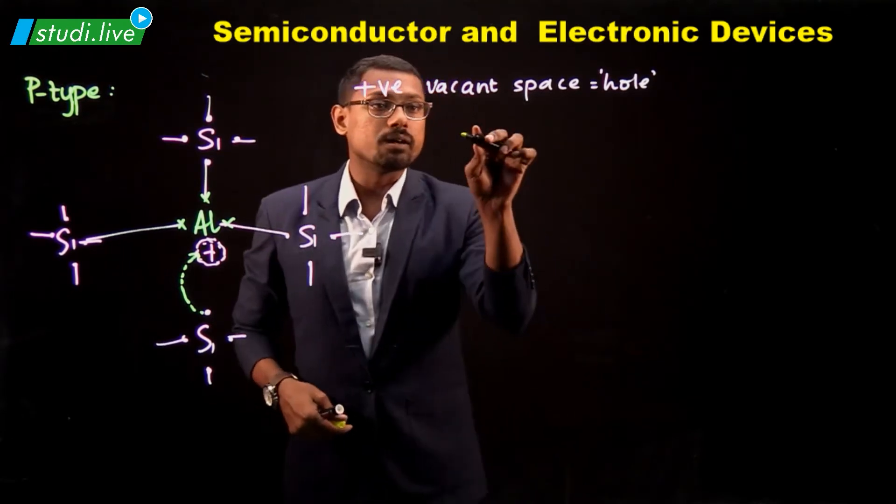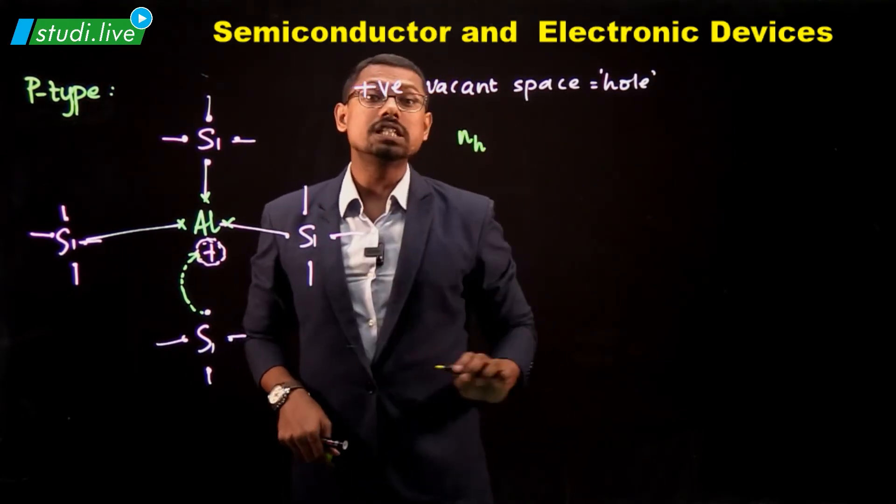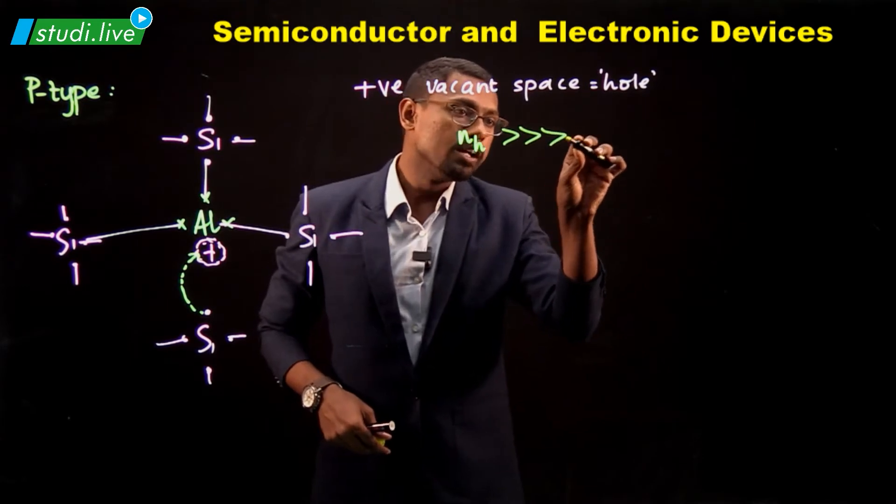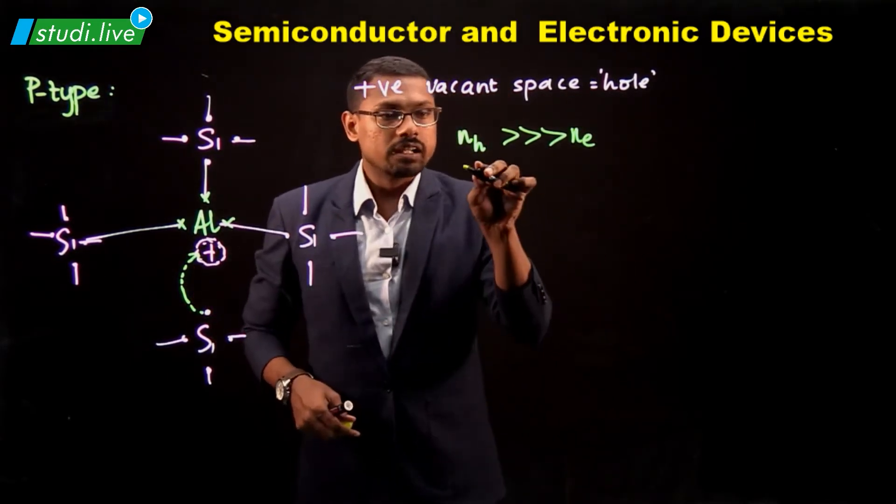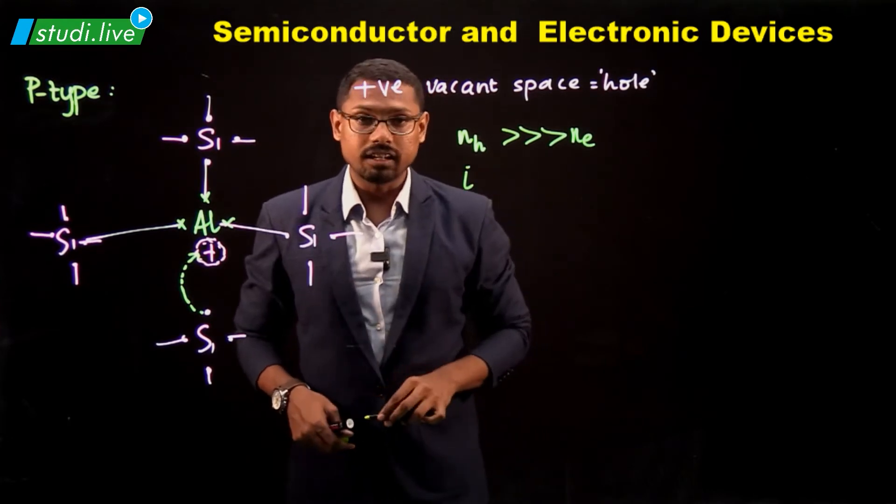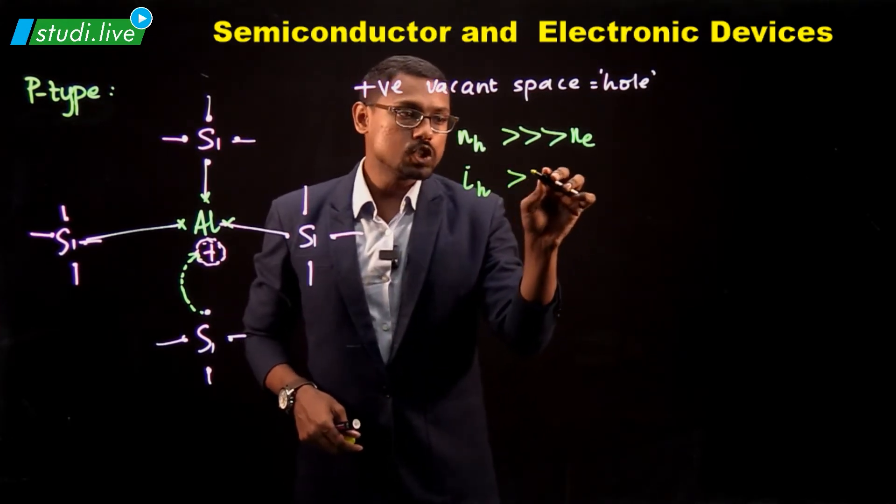Here we understand that the number density of holes is far, far, far greater than the number density of electrons. Obviously, the electricity or the electric current generated by the holes is much more than the electricity generated by the electrons.